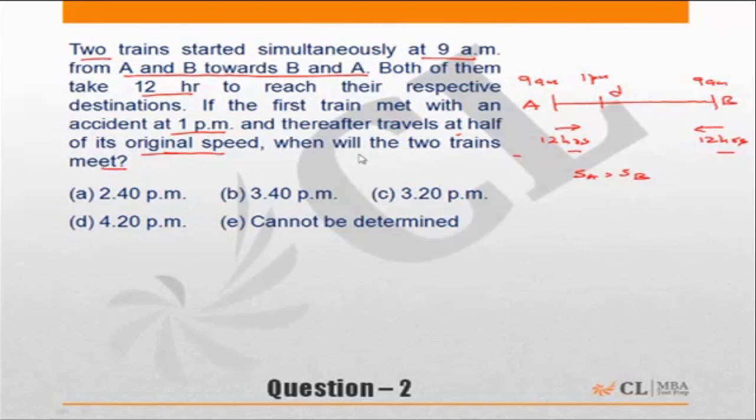When will the two trains meet? For such questions, it is always advantageous to assume a value of the distance or to assume the speeds. Oh, I made a small mistake—this should be S_A equal to S_B. So the speeds of the two trains are equal.